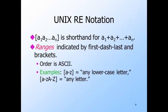You can also describe a sequence of symbols that are consecutive in the ASCII order of characters by giving the first character a dash and then the last character. For example, a dash z stands for any lowercase letter because the lowercase letters have consecutive codes in ASCII.